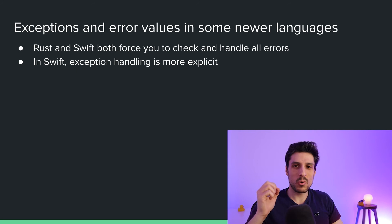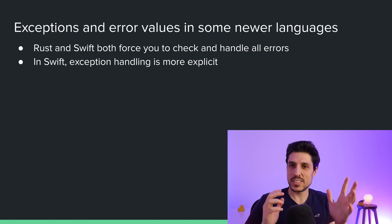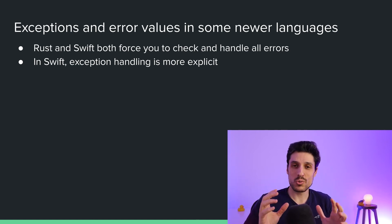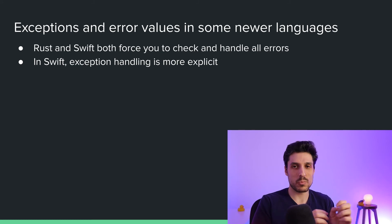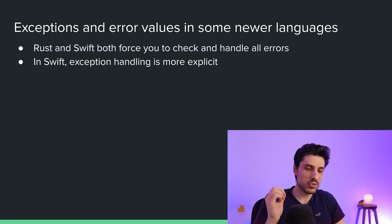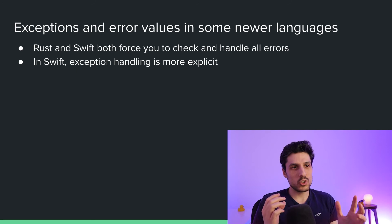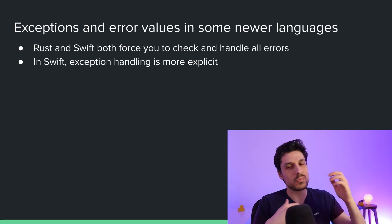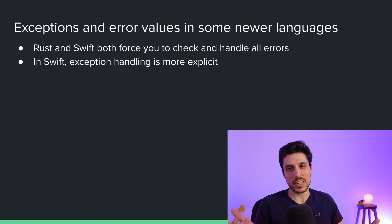A quick side note here: in some newer programming languages such as Rust and Swift, they change things up a little bit. For example, they both force you to check for all errors, whether that's error values or exceptions. They force you to check for them, which is really good if you want a really robust program and want to make sure that you've handled all of your errors properly. Also, in the case of Swift, which uses exceptions, it makes exception bubbling more explicit. It still allows them to bubble automatically, but it requires you to mark functions with the keyword throws — so it makes it more explicit and good in terms of being thorough with your error handling. The downside is that it makes things more verbose.